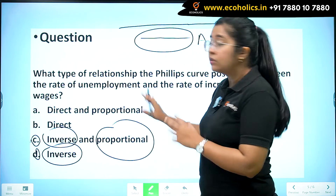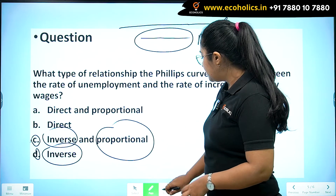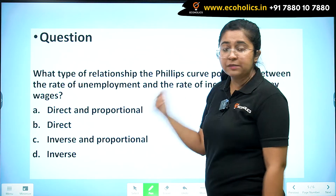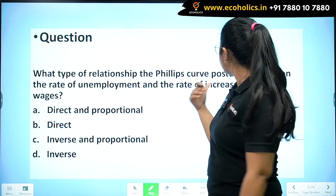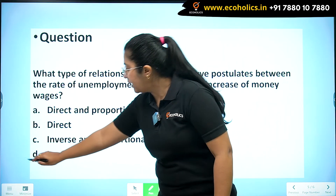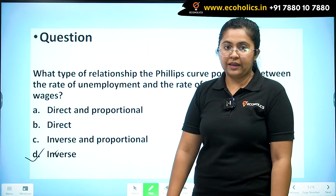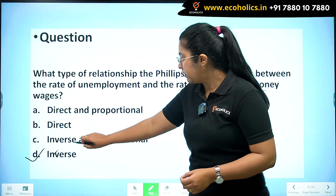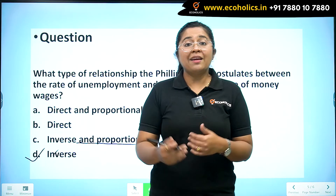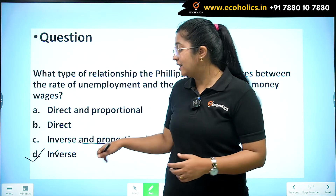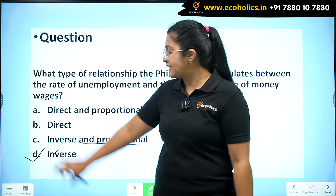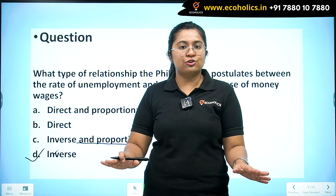The correct answer to this question — what type of relationship does the Phillips curve postulate between the rate of unemployment and the rate of increase of money wages — is simply inverse relationship. Many times, because of a longer-looking option, you might think that's the correct one, but that's just a trick. It's actually just an inverse relationship.